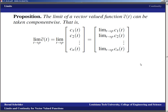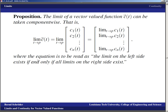That is how we make the transition to multivariable calculus: whenever we have a vector as an output, we apply the operations of calculus component-wise. The equation is to be read as: the limit on the left side exists if and only if all limits on the right side exist. Basically, we can reduce vector-valued calculus to single variable calculus.